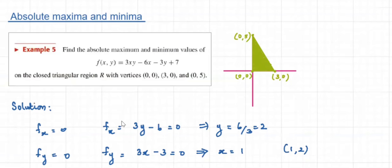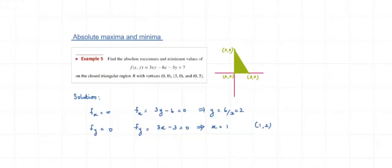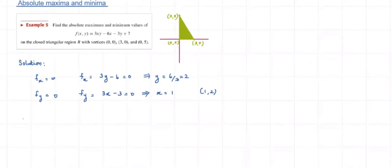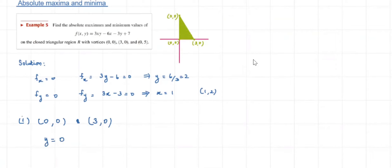Next we want to determine the location of the points on the boundary of this triangular region at which absolute extrema — that is, absolute maxima or minima — might occur. The boundary of R consists of three line segments, each of which we will treat separately. Let's start with the line segment joining (0,0) and (3,0). The equation of this line segment is y = 0, with x varying between 0 and 3.